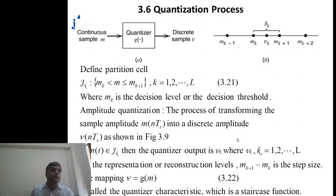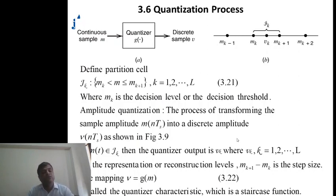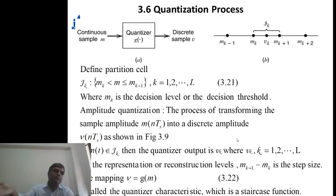Only then are we able to code this, because this particular value of 5 is represented in binary form. First we take the samples, then we encode them into binary numbers. A value like 4.8 cannot be directly coded, so we convert it to the nearest point — the nearest number is 5. Similarly, 5.2 is also converted into 5. That is the relationship between sample amplitude and discrete amplitude.